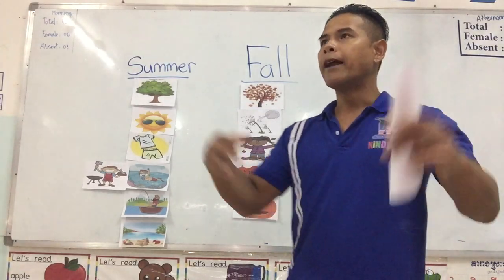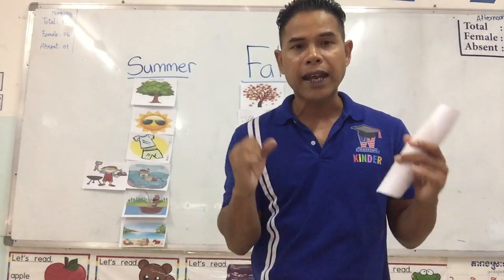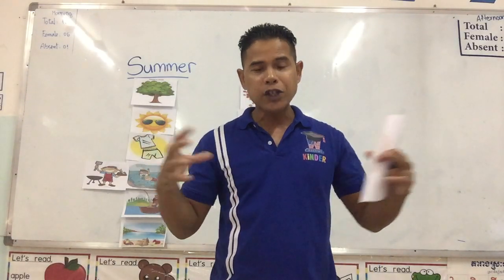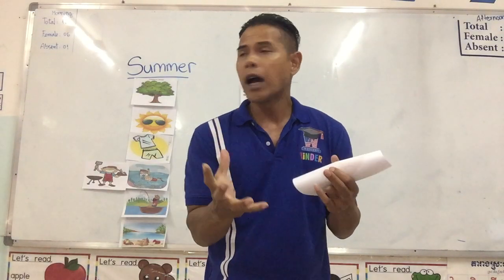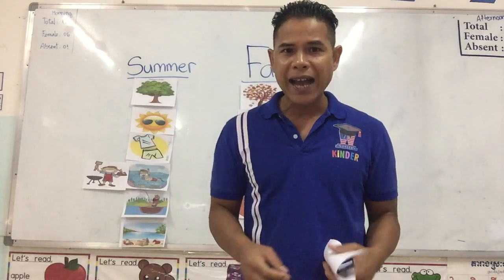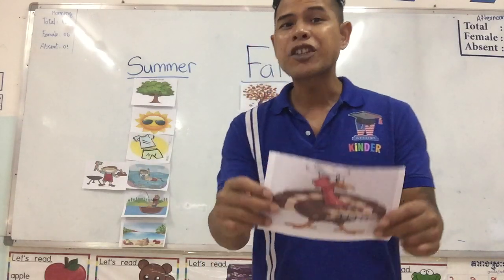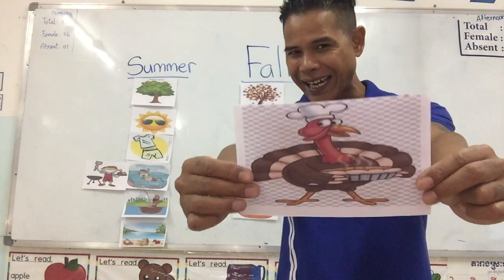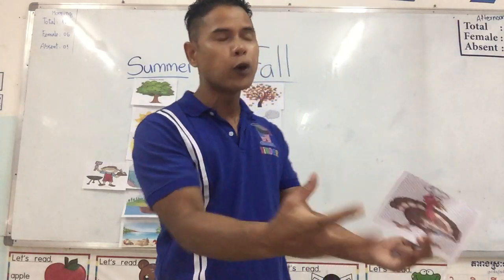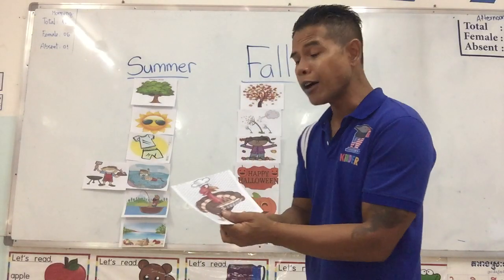There is another holiday that happens in the fall. People come together, family comes together, they sit down and eat with one another. They will eat turkey, they will eat ham, they will eat pumpkin pies. It is called Thanksgiving. Thanksgiving also happens in the fall — we sit down with our family, we eat food together, we enjoy our food. That happens in the fall.